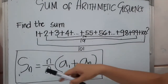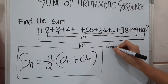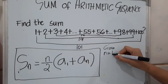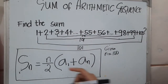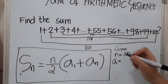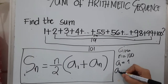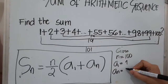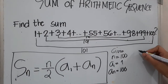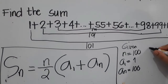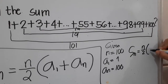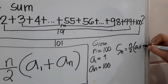That's how you get the sum of n terms of an arithmetic sequence. From the problem, we identify our givens: n equals 100 terms, a sub 1 equals 1, and a sub n equals 100 as our last term. We can now use our formula: S sub n equals n over 2 times the first term plus the last term.